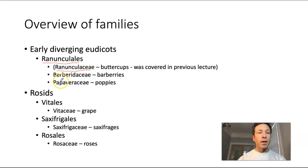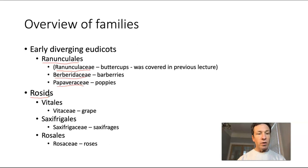We have left to talk about Berberidaceae, the barberries, and Papaveraceae, the poppies. After these groups, we will move into one of the large clades within the eudicots — that is the rosid clade. There are several orders within the rosids and then many families within these orders.